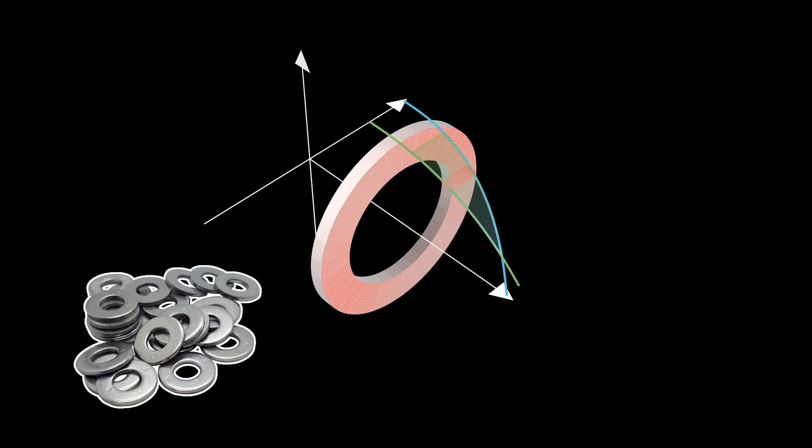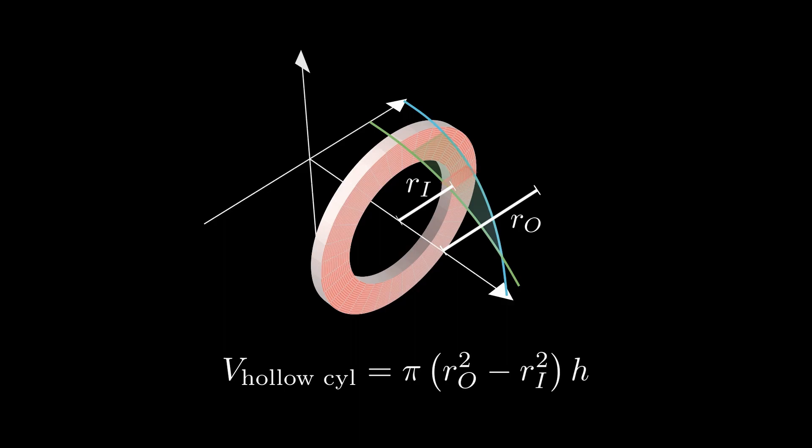The volume of a hollow cylinder is given by pi times the difference of the squares of the outer and inner radii, multiplied by the height of the hollow cylinder. The outer radius is given by the upper function, and the inner radius is given by the lower function. The height is given by delta x.